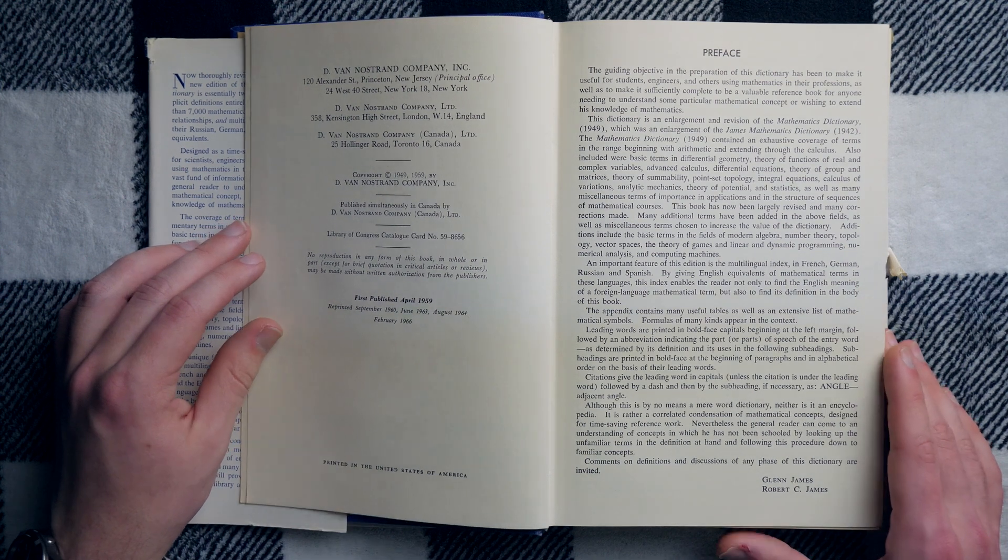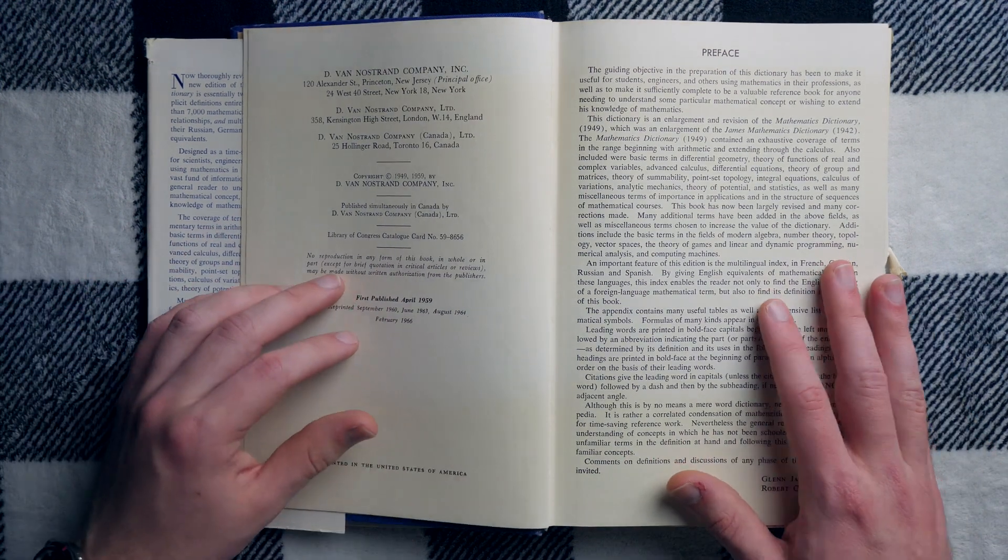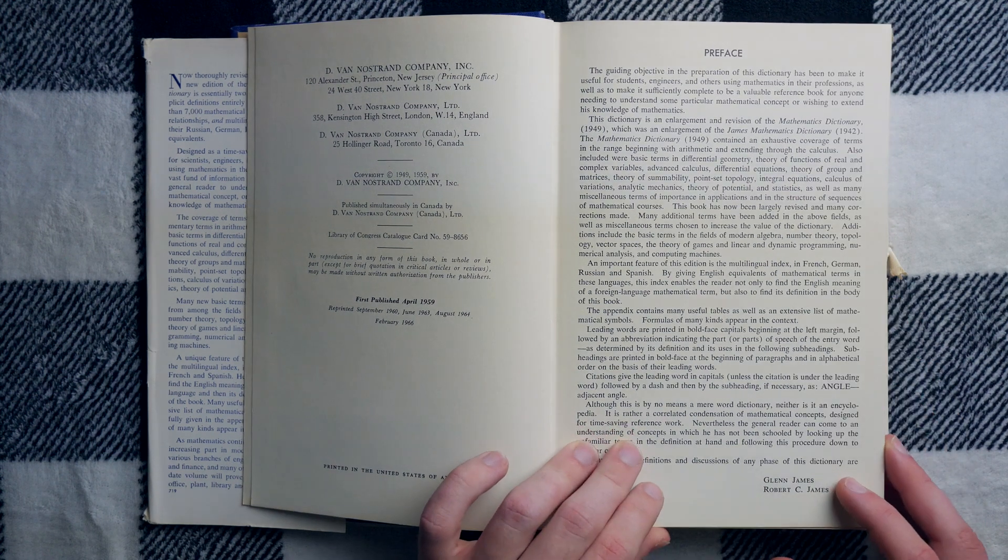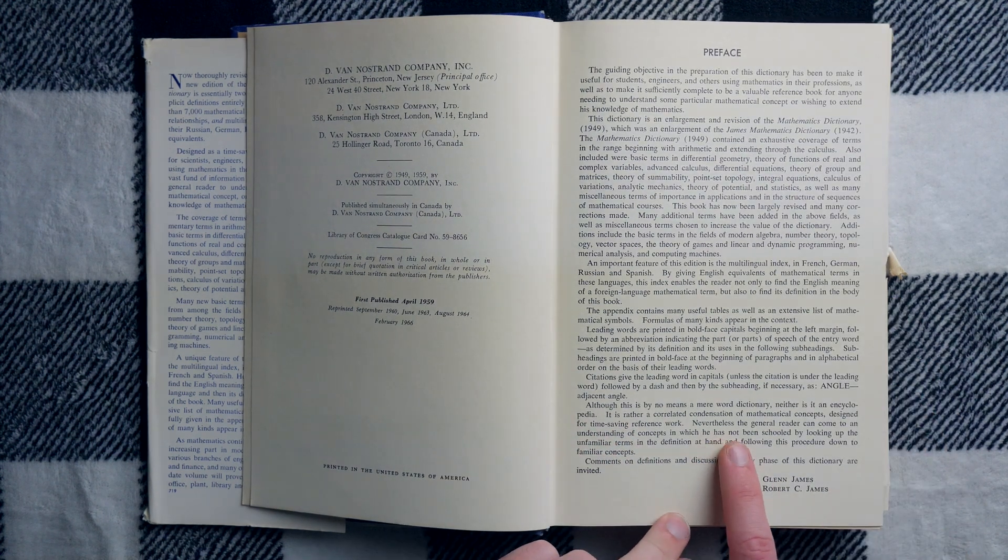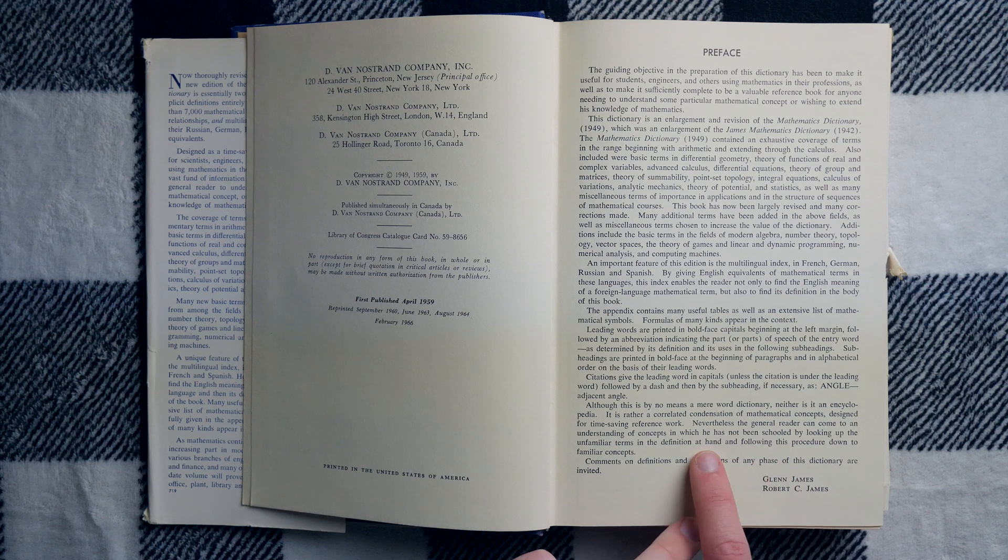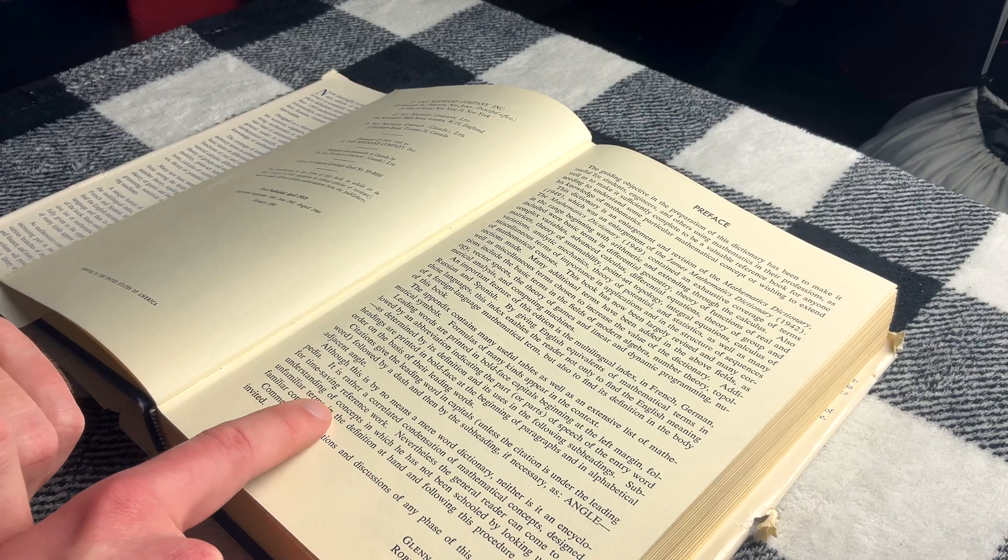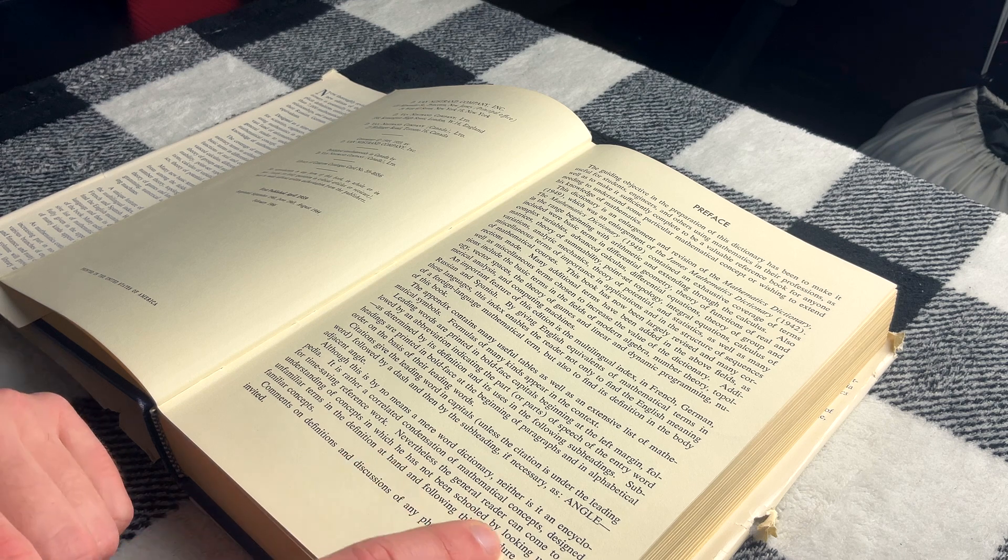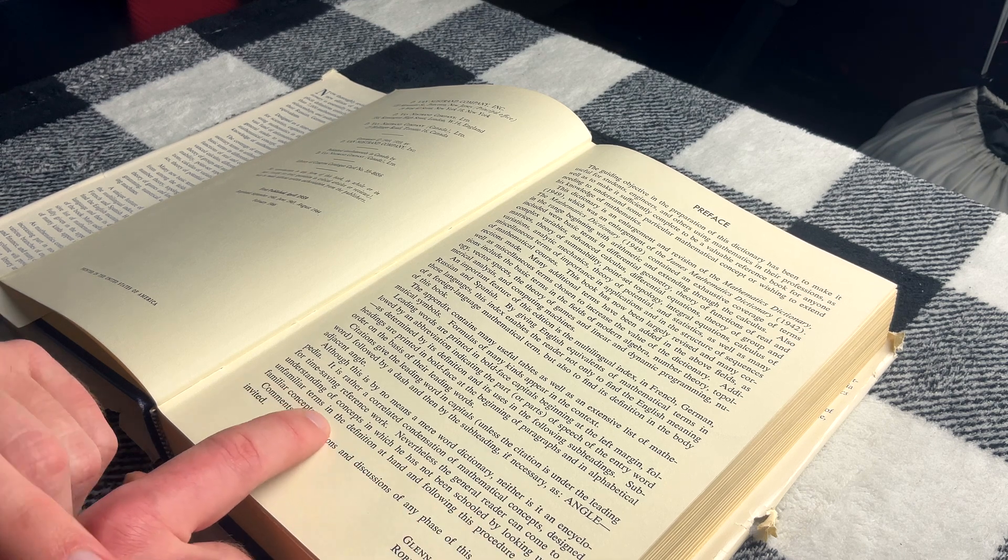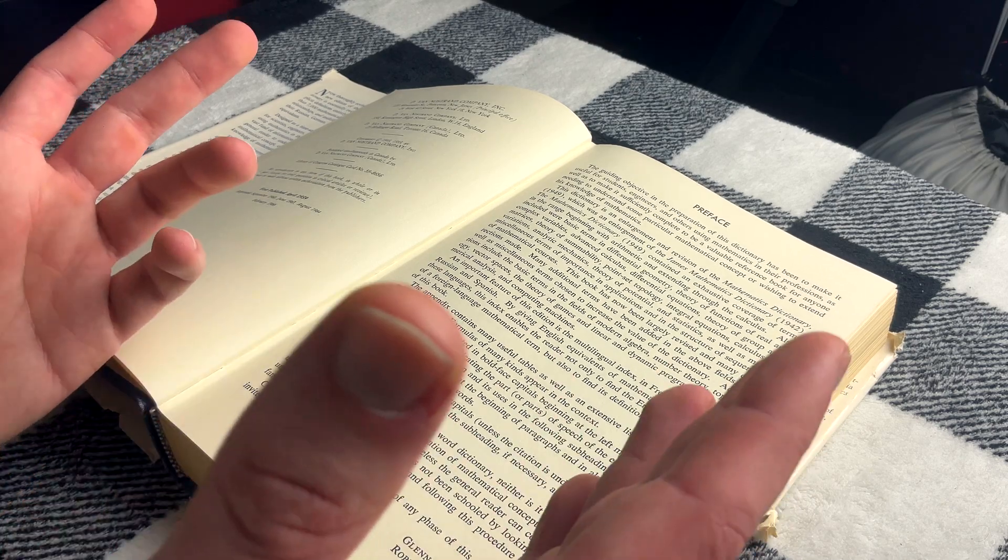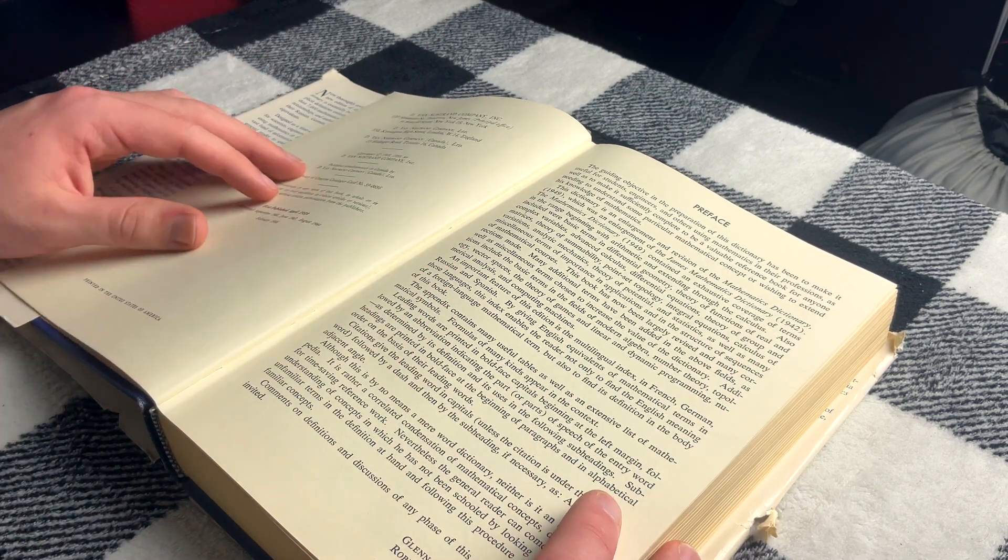In the preface, it makes some mention of how this book compares to an encyclopedia. Although this is by no means a mere word dictionary, neither is it an encyclopedia. It is rather a correlated condensation of mathematical concepts designed for time-saving reference work. You've got a book here stuffed full of terms. You can just reference the book. The general reader can come to an understanding of concepts in which he has not been schooled by looking up the unfamiliar terms and following this procedure down to familiar concepts, much in the way you would use an encyclopedia.